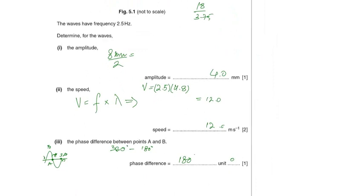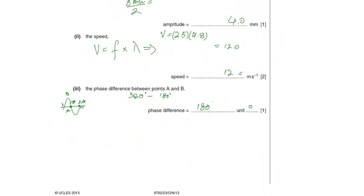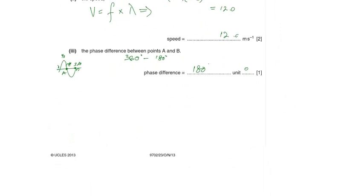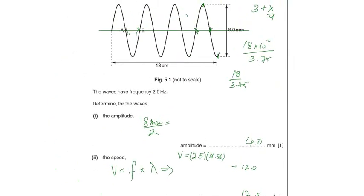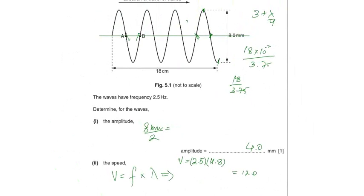Number three, the phase difference between the points A and B. So if you look at both A and B, they are not in phase.